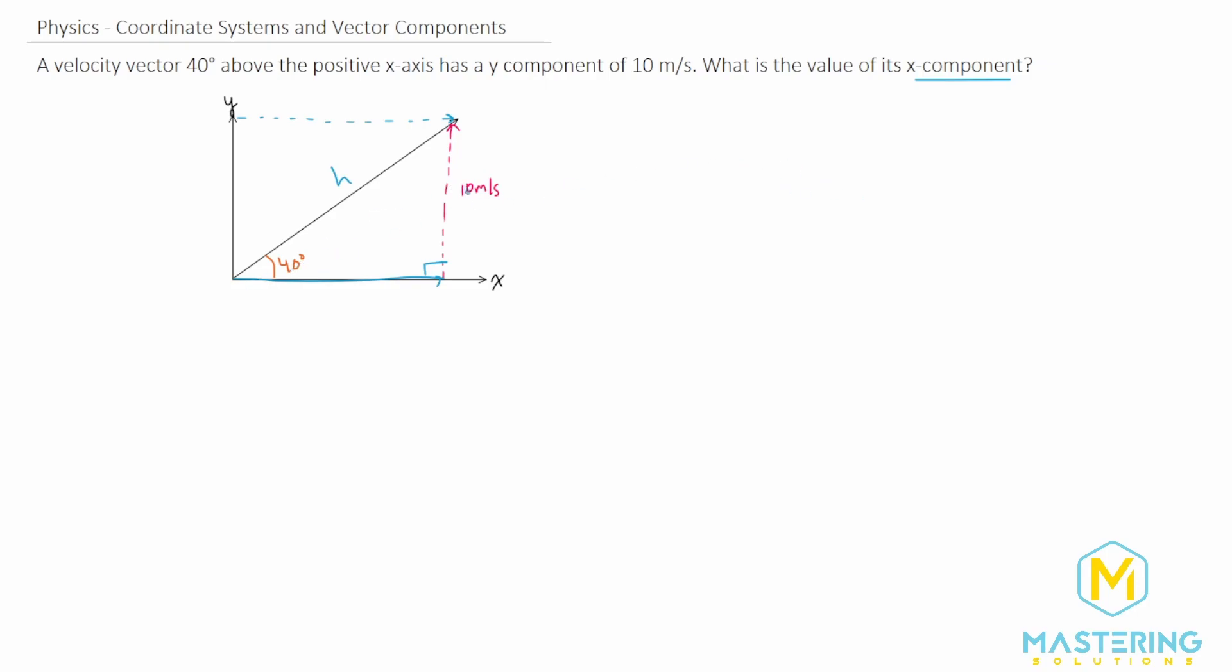So since we have the opposite and we have the angle, we have SOH CAH TOA, we're going to be using sine, or SOH, which stands for sine of the angle is equal to opposite over hypotenuse, to solve for what the hypotenuse is.